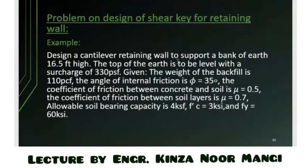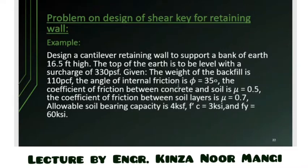Design a cantilever retaining wall to support a bank of earth 16.5 feet high. The top of the earth is to be level with a surcharge of 350 psf. The weight of the backfill is 110 pcf, the angle of internal friction is 35 degrees, the coefficient of friction between concrete and soil is 0.5, between soil layers is 0.7, the allowable bearing capacity is 4 ksf, f'c = 3 ksi, and fy = 60 ksi.